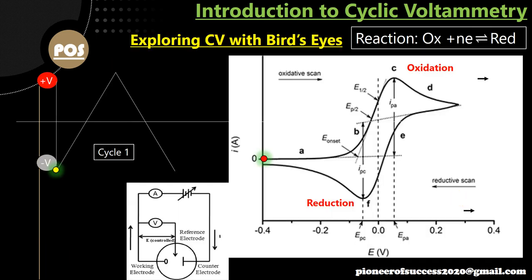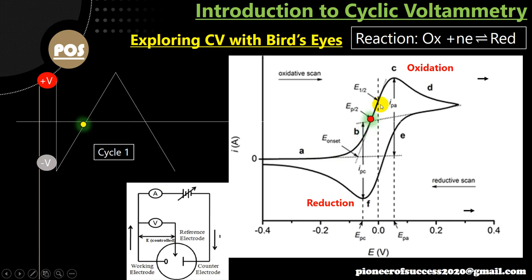Today's topic is exploring CV with a bird's eye view. This is very important — if we do not understand this curve appropriately, our learning of cyclic voltammetry will not be complete. The reaction we have chosen is Ox + ne⁻ → Red, happening reversibly. As we change the voltage, the current changes accordingly, and when we join all the recorded points we get this cyclic voltammogram.